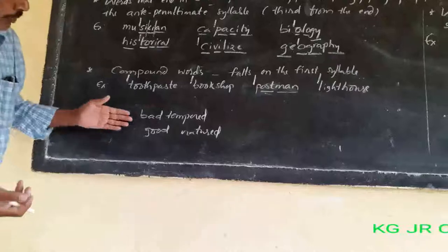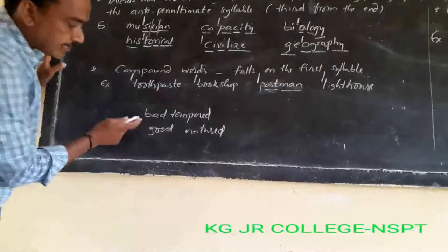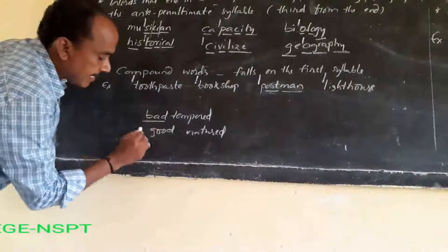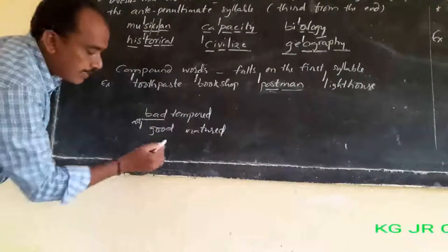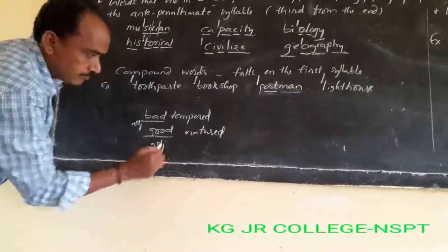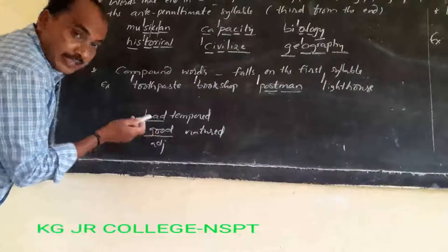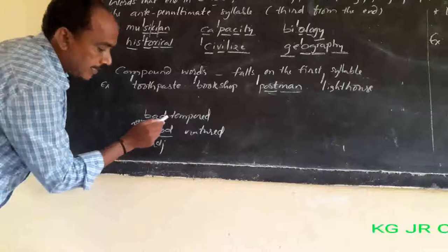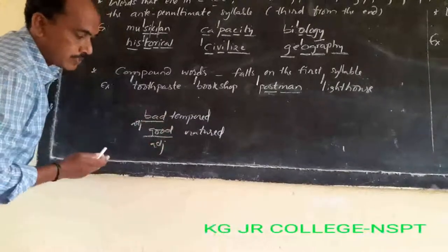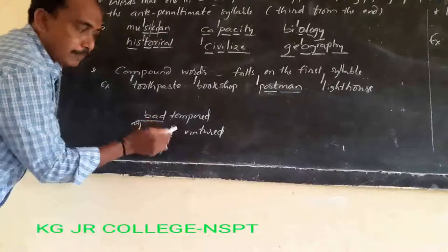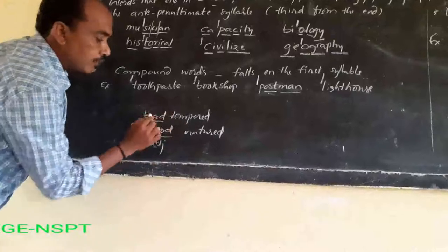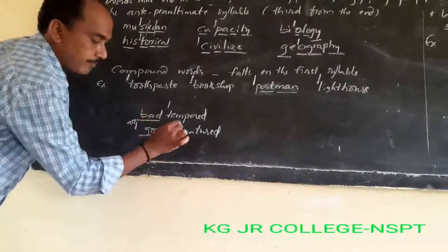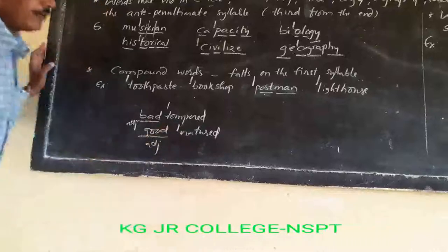Different compound words: 'bad-tempered', 'good-natured'. In these, 'bad' is an adjective and 'good' is an adjective. These are also called compound words, but they are open compound words. In this type of word, the stress is placed after the adjective — that means the second part (the noun) receives the stress.